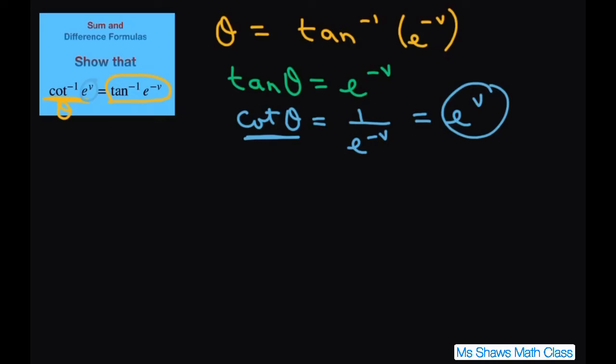Now, because of the nature of exponents, e to the negative v has to be positive. So we're in quadrant 1.